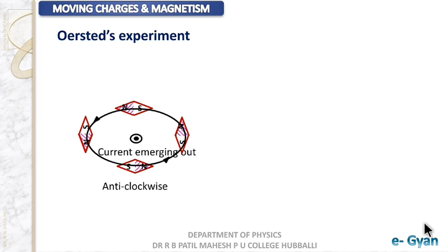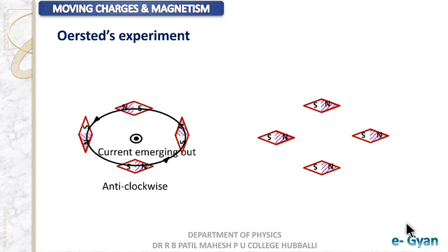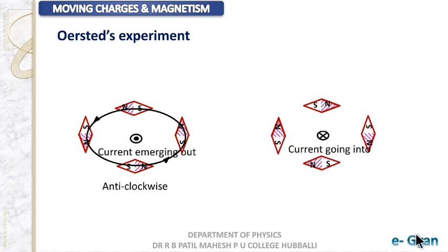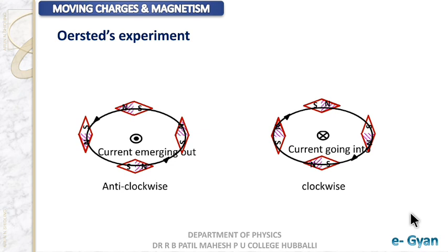The magnetic field is in a circular pattern with the current carrying wire at the center, and in this case it is anti-clockwise. When the current is into the plane of the screen, the magnetic compasses align in exactly the opposite way. In this case the magnetic field is in a clockwise direction.